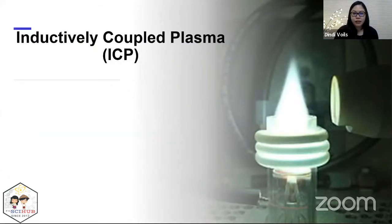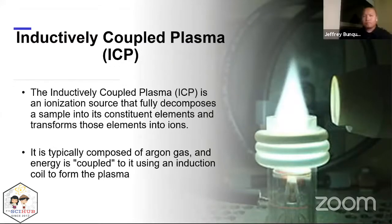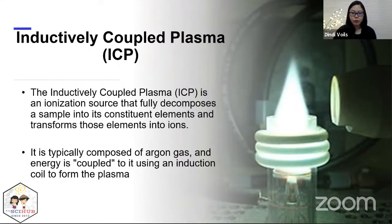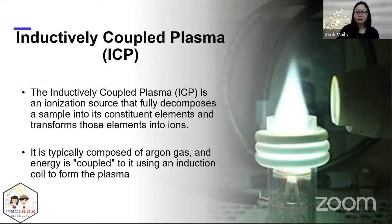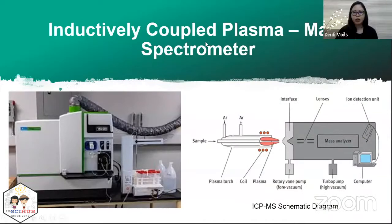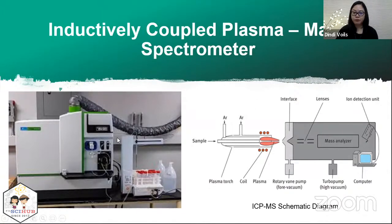One type of ionization method is called inductively coupled plasma (ICP), where the sample gets converted into a plasma — a soup of charged particles. ICP is typically composed of argon gas, and energy is coupled to it using an induction coil to form the plasma at super high temperatures, like thousands of degrees Celsius. When the sample interacts with the plasma, it becomes plasma itself. ICP-MS is generally more sensitive than AAS techniques.